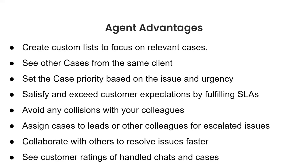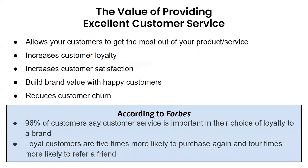By implementing a clear support process and leveraging these agent advantages, you'll immediately recognize key benefits. It allows customers to get the most out of your product or service, increasing customer loyalty, satisfaction, and helping build brand value. Ultimately, this contributes to reducing customer churn. According to Forbes, 96% of customers say customer service is important in their choice of loyalty to a brand. Loyal customers are also five times more likely to purchase again and four times more likely to refer a friend. Now let's jump into some of the features.